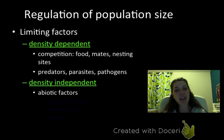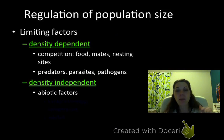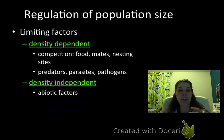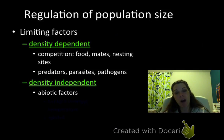Also, predators, parasites, pathogens — things that are going to actively be using the population as a host, or eating members of the population, or being carried on the members of the population. If you think about disease, the closer together you are, the more that disease is going to be passed on. So, those are density-dependent.